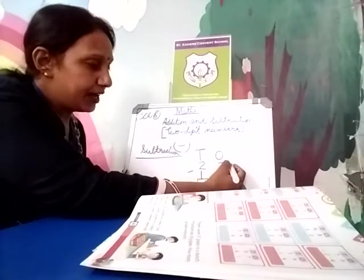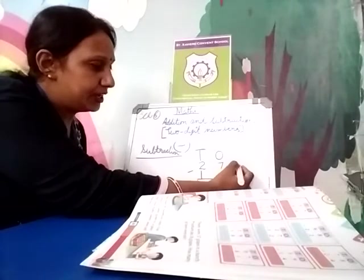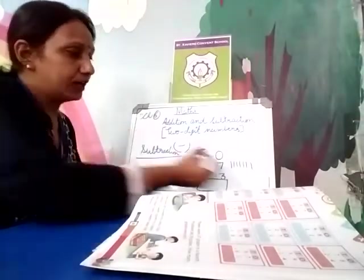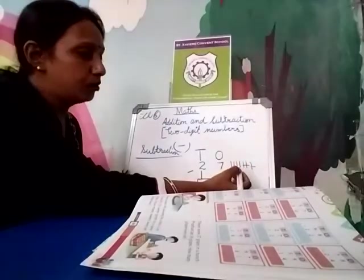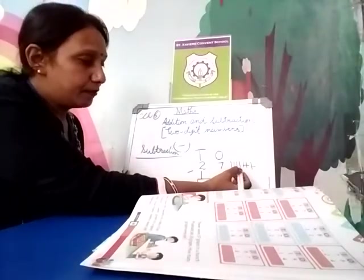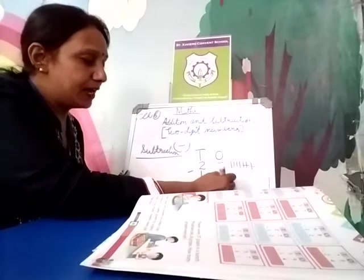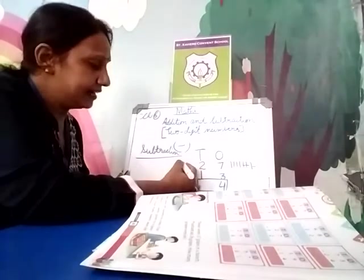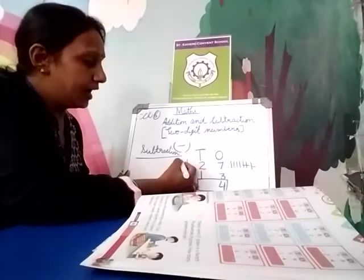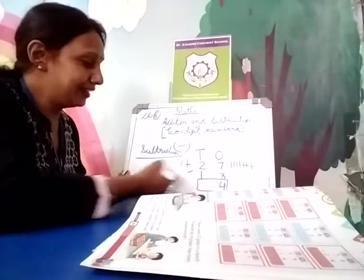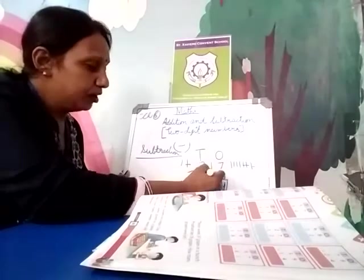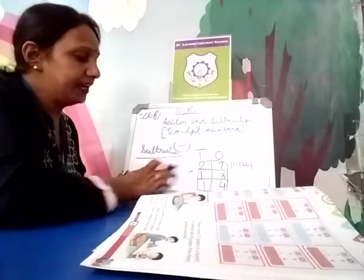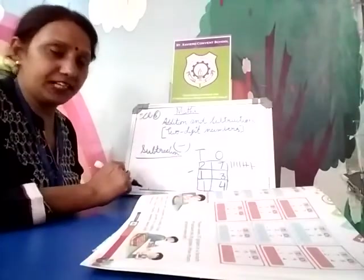Now subtract. You have 7 pencils and you give 3 pencils to your friend — cut 3. Count what is left: 1, 2, 3, 4 — 4 pencils remain. So the ones side answer is 4. The other side: you have 2 toffees and you give 1 to your mama, so 1 is left. The complete 2-digit subtraction answer is 14 — ones side 4, tens side 1.